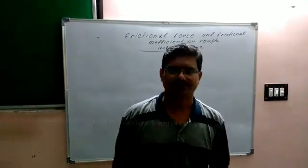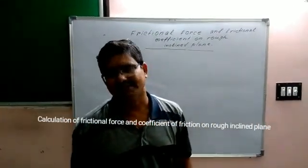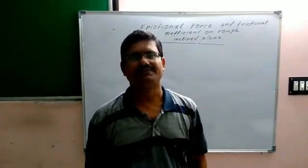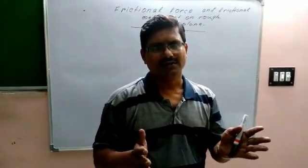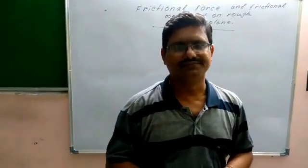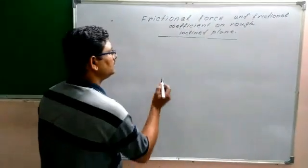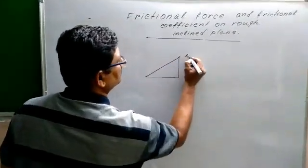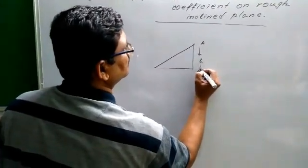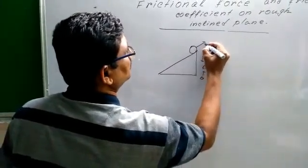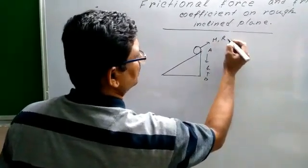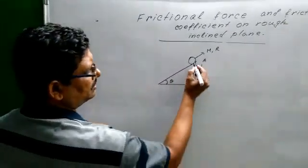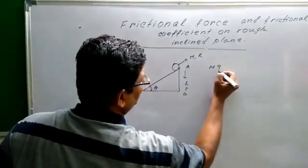Hello students, you are welcome to Newton Physics channel. Today we will discuss frictional force and frictional coefficient when a body is rotating along an inclined plane. The body is at a height H, with mass m, radius r, and angle of inclination theta. When the body is at height H, its potential energy is mgH.